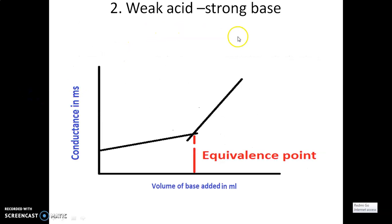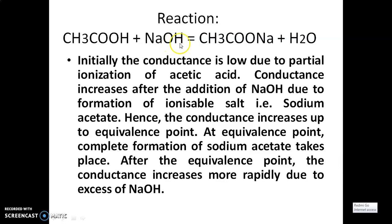The second type is weak acid versus strong base — acetic acid versus NaOH. The reaction is: acetic acid plus NaOH gives sodium acetate and water. Initially, the conductance is low due to partial ionization of acetic acid. After addition of sodium hydroxide, the conductance increases due to formation of ionizable salt, that is sodium acetate. Hence, the conductance increases up to the equivalence point. At the equivalence point, complete formation of sodium acetate takes place. After the equivalence point, the conductance increases more rapidly due to excess of sodium hydroxide.